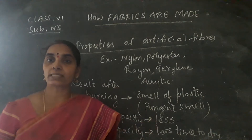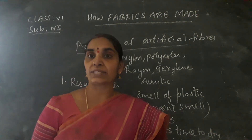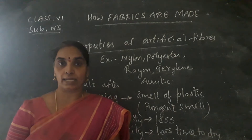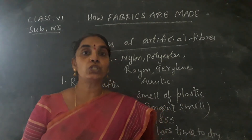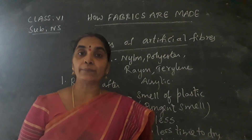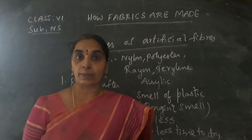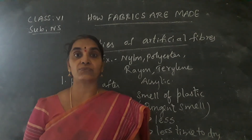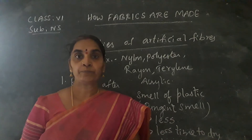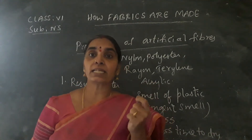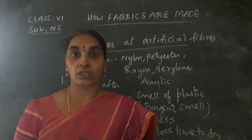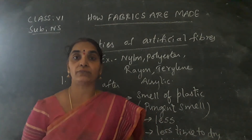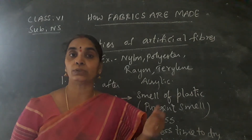From this you can understand that there are a lot of differences between natural fibers and artificial fibers. Natural fibers are obtained from plants and animals — cotton, wool, jute, silk — obtained from nature. Artificial fibers are man-made from chemicals. When burnt, they give pungent smell, take less time to dry, do not absorb more water, and have very less expansion capacity when compared to natural fibers like wool.